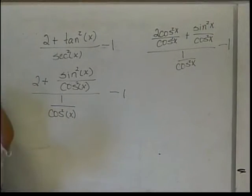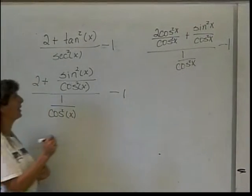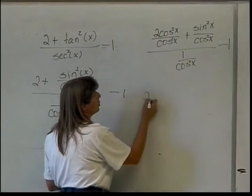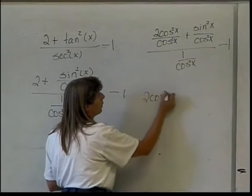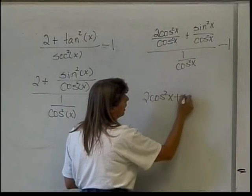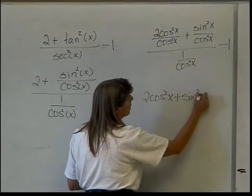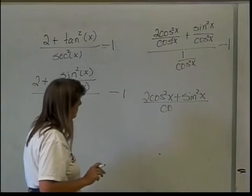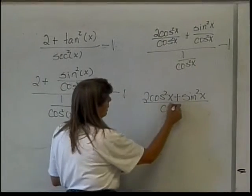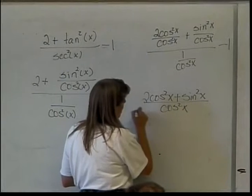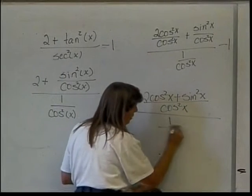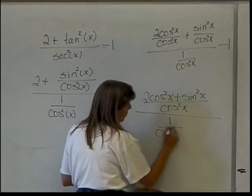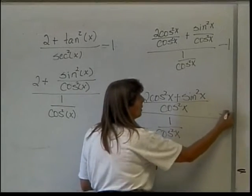Now, when I put the two fractions in my numerator together, I get 2 cosine squared of x plus sine squared of x divided by cosine squared of x. I still have 1 over cosine squared of x, still minus 1.